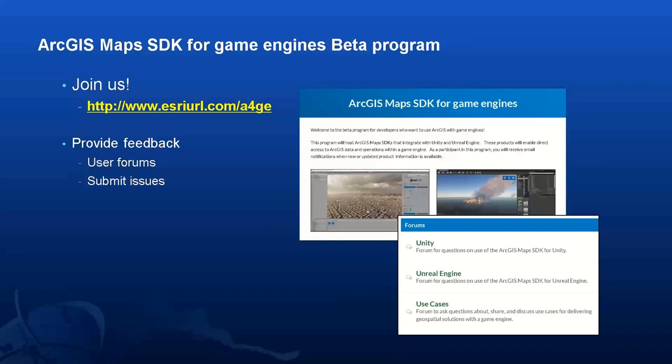Is it possible to turn ArcGIS layers on or off during gameplay at runtime? That is something we will target and it will work — we just have a little extra API work to be done. It won't probably work for the first beta, but it will work for beta 2, which we release right after, as it's one of the functionalities enabled right after the first beta ships.